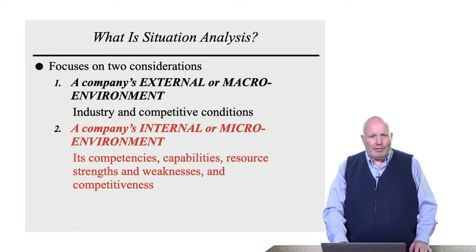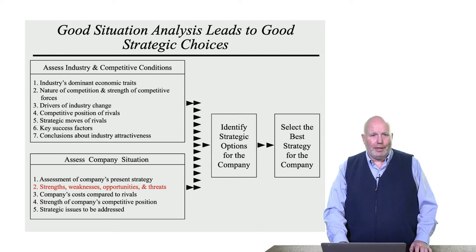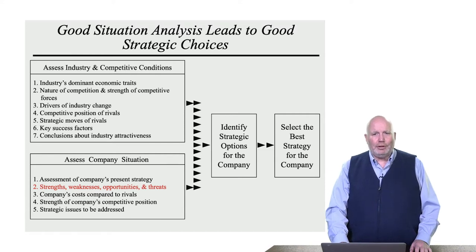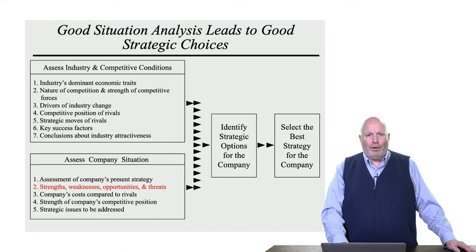The industry analysis focused on the external environment; here we're looking at the internal environment. Going back to our standard model, industry capabilities were responsible for five factors in the industry analysis, while the company analysis or firm situation is responsible for three things. If we do these well, they'll help us identify options for the company and choose the best strategy moving forward.